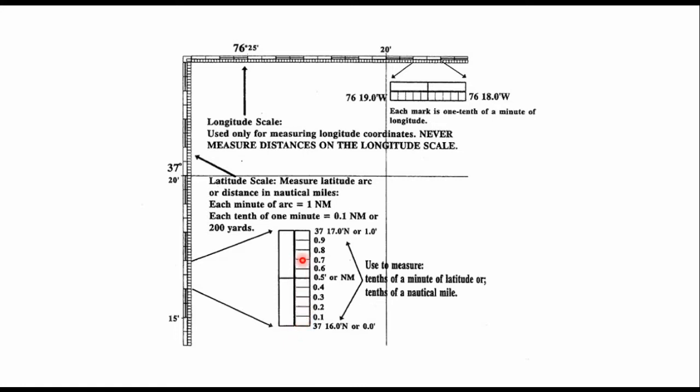So we have 0.1 all the way through 0.9. If we wanted to find 37 degrees 16.1 minutes, it's just one tick above that 37 degrees 16.0. 37 degrees 16.5 is this long line right here. It's halfway in between, and so on and so forth.